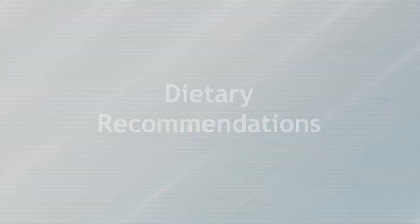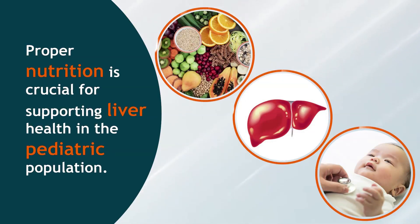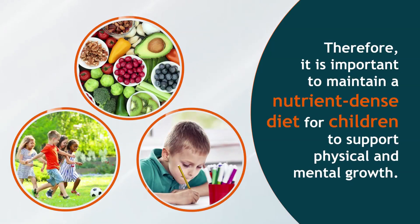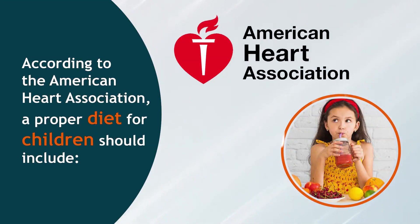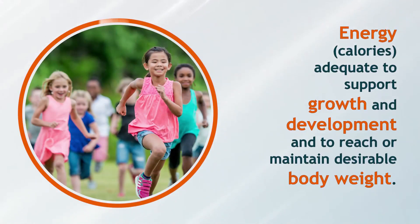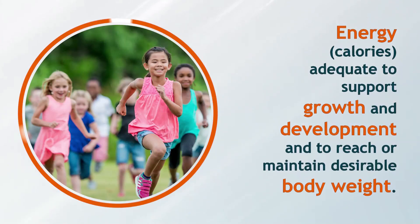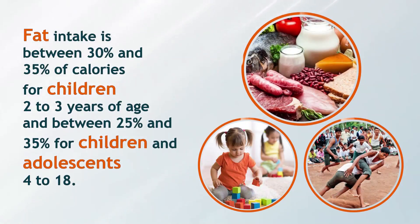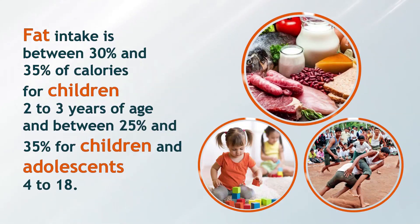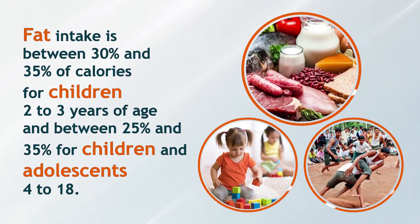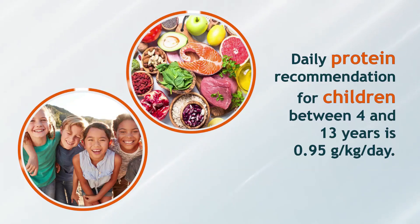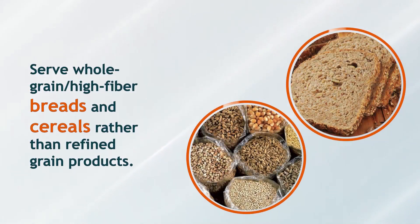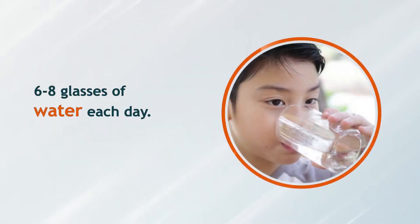Proper nutrition is crucial for supporting liver health in the pediatric population. Therefore, it is important to maintain a nutrient-dense diet for children to support physical and mental growth. According to the American Heart Association, a proper diet for children should include energy and calories adequate to support growth and development, and to reach or maintain desirable body weight. Fat intake should be between 30% and 35% of calories for children aged 2 to 3 years, and between 25% and 35% for children and adolescents aged 4 to 18. Daily protein recommendation for children between 4 and 13 years is 0.95 grams per kilogram per day. Meals should include whole grain high-fiber breads and cereals rather than refined grain products, at least one fruit or vegetable, and 6 to 8 glasses of water each day.